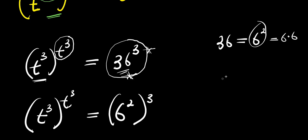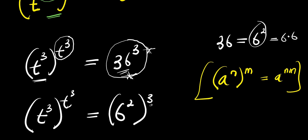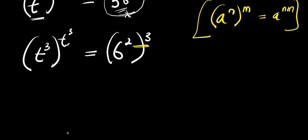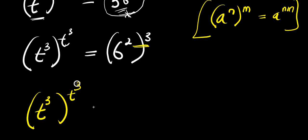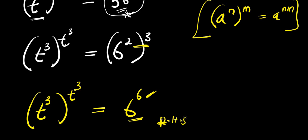Now, if you have a to the power of n raised to the power of m, this equals a to the power of n times m. So we are going to multiply 2 times 3, giving us 6. What we have right now is: t to the power of 3, raised to the power of t to the power of 3, equals 6 to the power of 6. At this point, the base and the exponent are the same on the right hand side, and also the base and the exponent are the same on the left hand side.